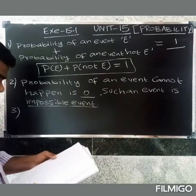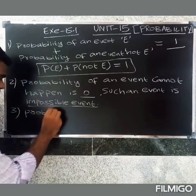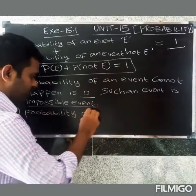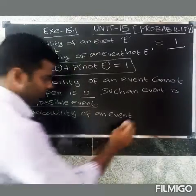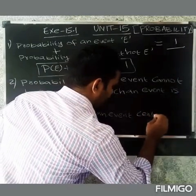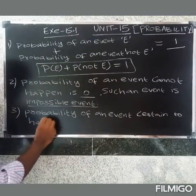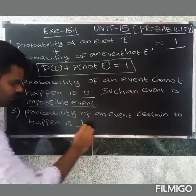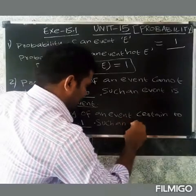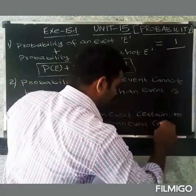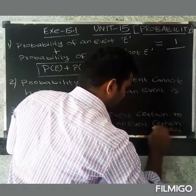Third question: What is the probability of an event that is certain to happen? The probability of a certain or sure event is 1. Such an event is called a certain event or sure event.